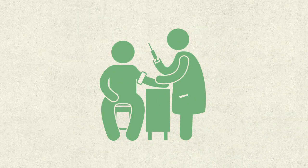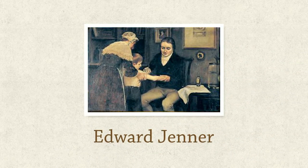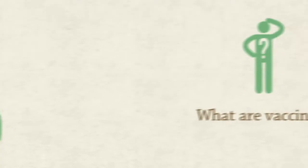In order to understand vaccines, we must first look at where they came from. In 1796, Edward Jenner injected material from a cowpox virus into an 8-year-old boy with the hope that it would protect him against smallpox. And it worked! It saved many from the smallpox virus, and this was the first ever vaccine.